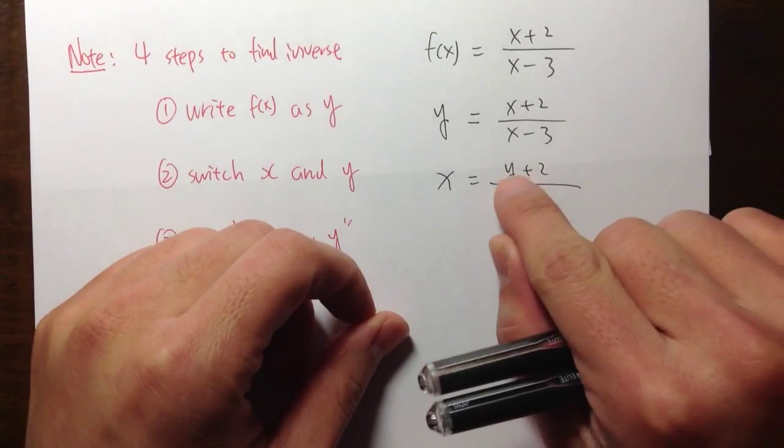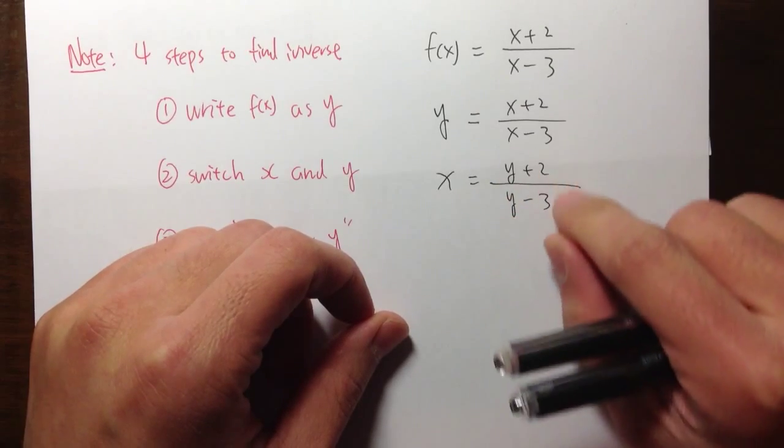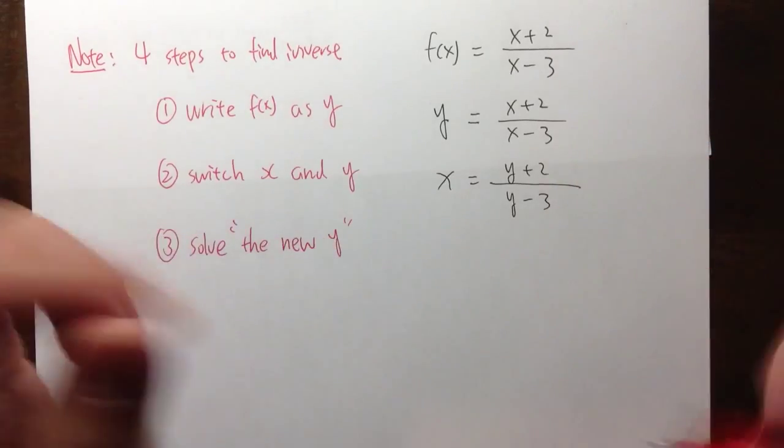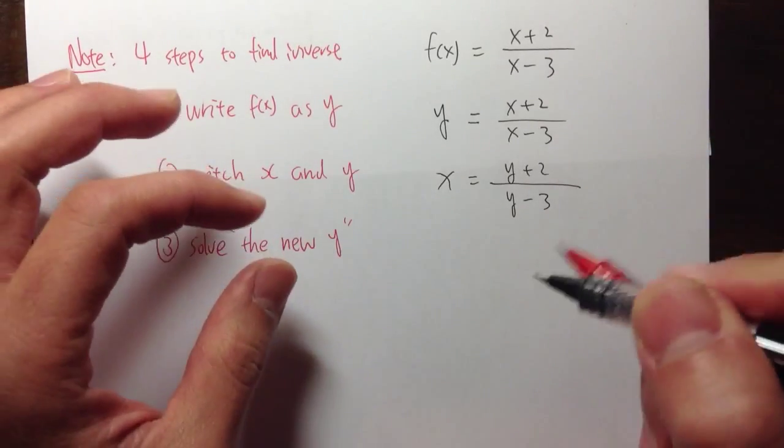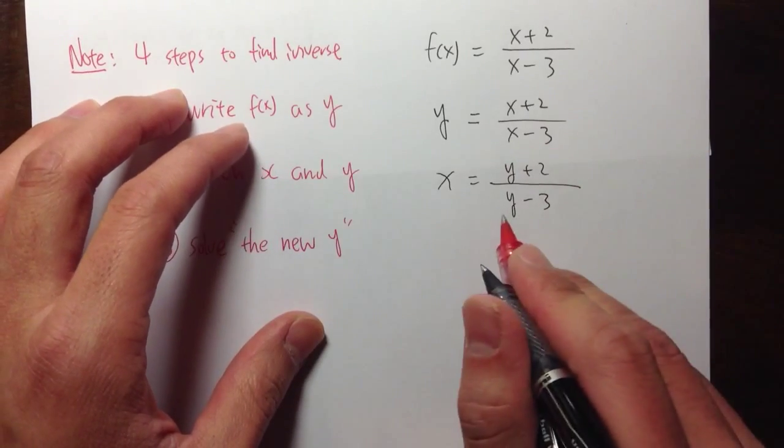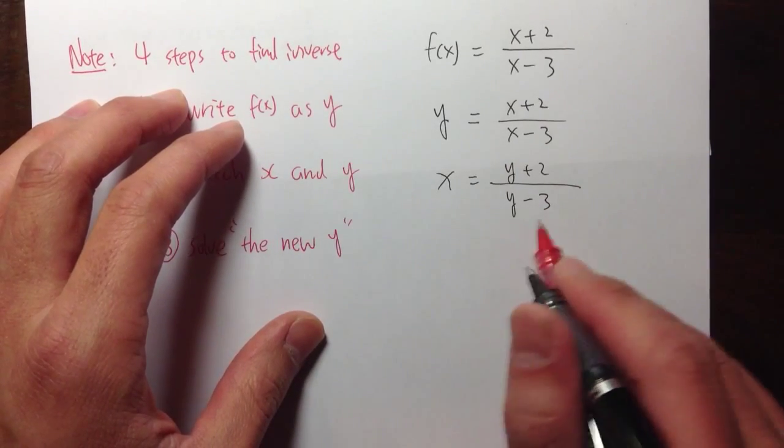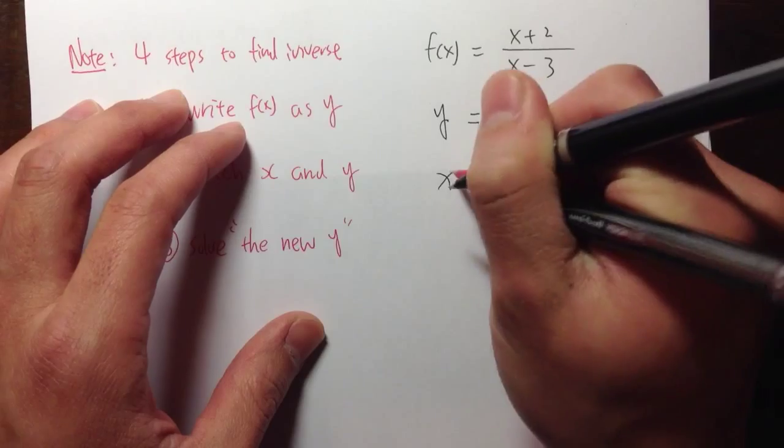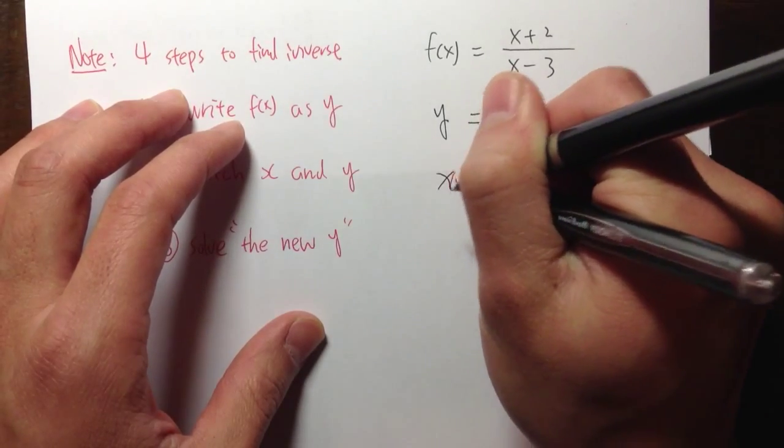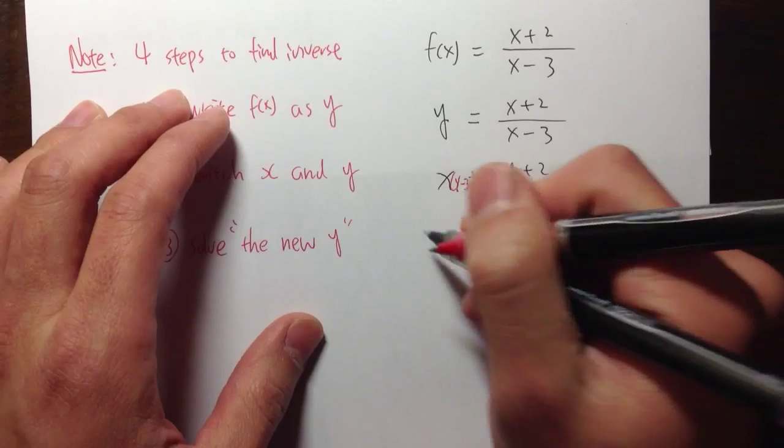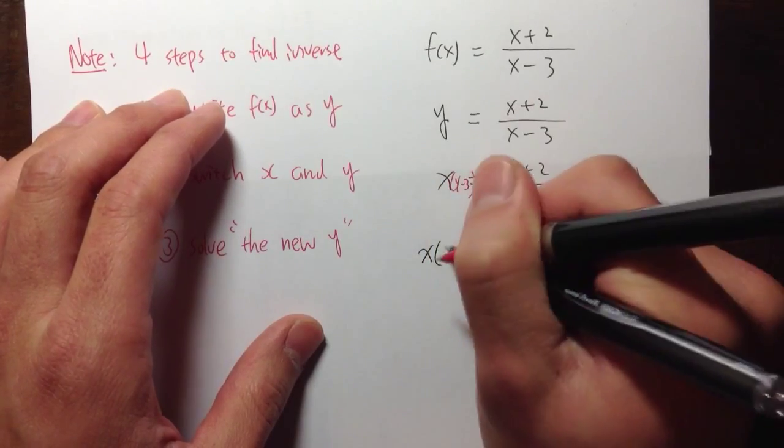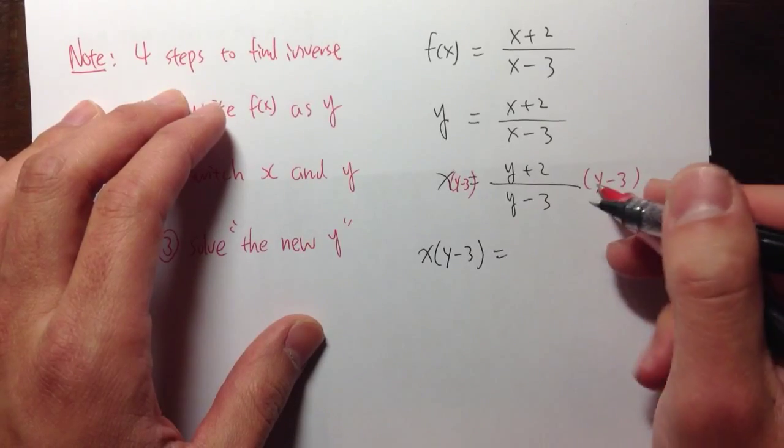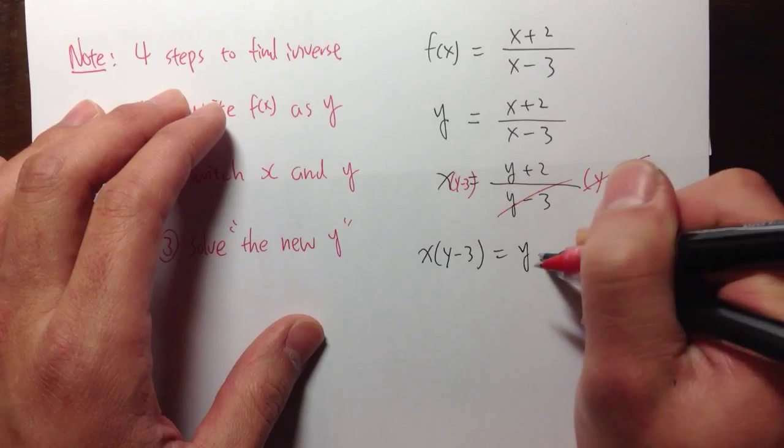First of all, notice that we have y plus 2 over y minus 3. We have two y's, right? Pretty much, we have two y's. And this is how we are going to do it. First of all, we are going to multiply both sides by the denominator y minus 3. That way, you don't need to deal with the denominators anymore. We put a y minus 3 like that. So we are going to have x times y minus 3. It's equal to, when we multiply it, y minus 3. This and that cancels. And we get y plus 2.